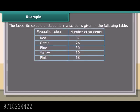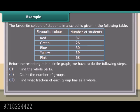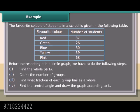Example 1: The favorite colors of students in a school is given in the following table. Before representing it in a circle graph, we have to do the following steps: 1. Find the whole parts. 2. Count the number of groups. 3. Find what fraction of each group has as a whole. 4. Find the central angle and draw the graph according to it.